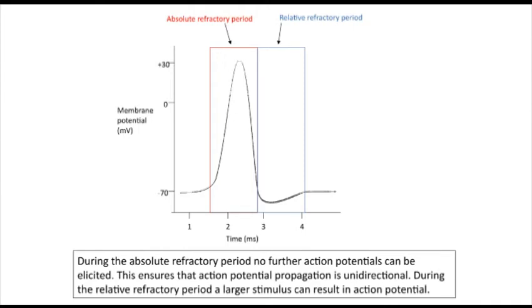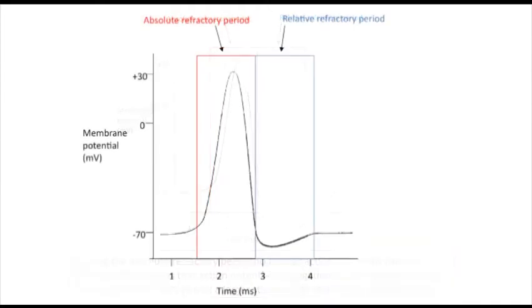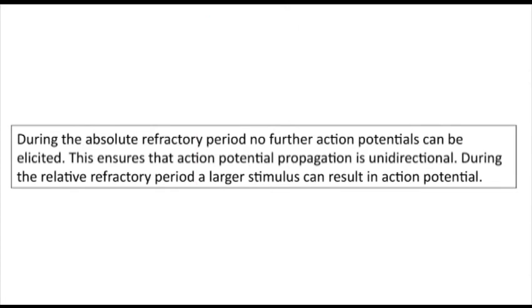As action potentials are all-or-nothing events, it is not possible to interrupt them once started. This phenomenon is called the refractory period. Action potentials actually have two refractory periods: an absolute refractory period and a relative refractory period. The absolute refractory period is the period of time during which it is impossible for the neuron to fire another action potential — this is during the depolarization and repolarization phases, and is primarily due to sodium channel inactivation. The relative refractory period is the time when it is difficult, but possible, to generate another action potential if a large stimulus is applied, and it occurs during the after-hyperpolarization, or undershoot, phase.